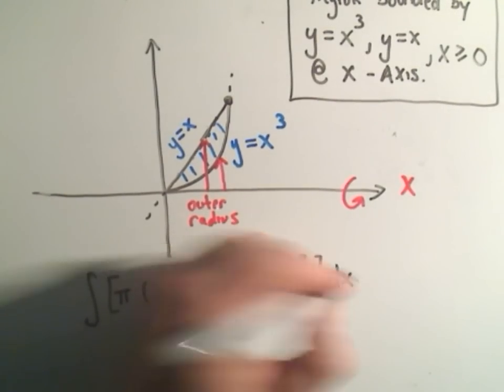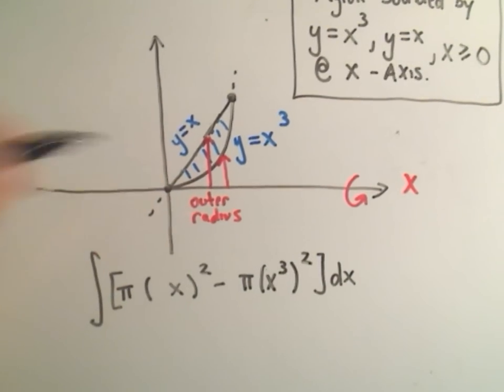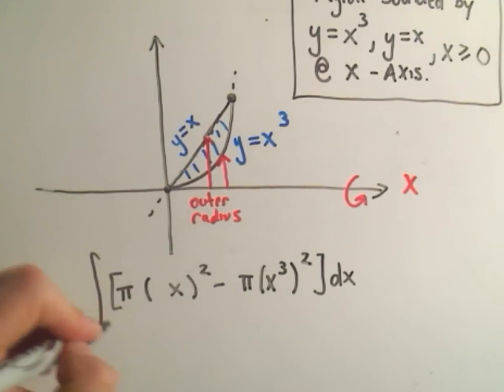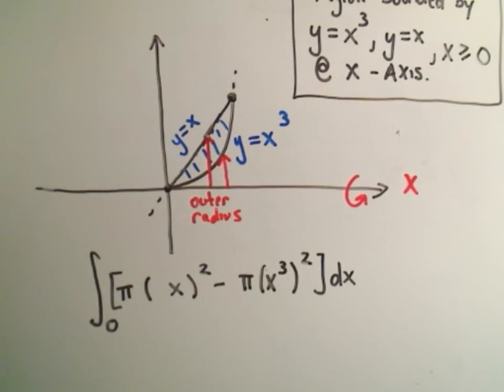We're integrating this with respect to x. So that means the limits of integration are going to come from the x-axis. Well the smallest x coordinate that we're using here is zero.